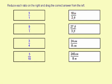This first one, 18 inches to 2 feet. Well, feet and inches aren't the same units, but I know there are 12 inches in a foot. So that means 2 feet has 24 inches. So I'm going to say it's equal to 18 inches to 24 inches, because 24 inches is 2 feet.